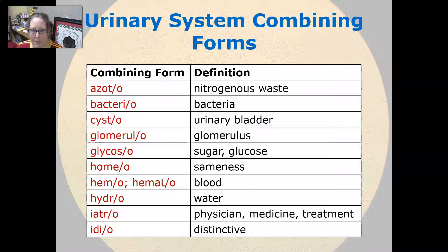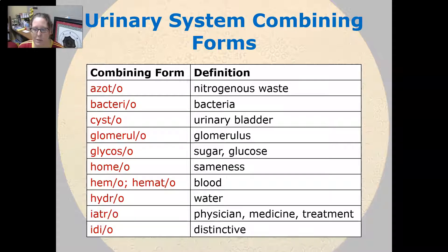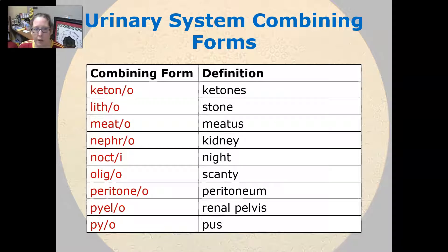Homeo means sameness, and hemo or hemato both mean blood. Hydro means water. Iatro means physician, medicine, or treatment — iatrogenic means something induced by physician, medicine, or treatment. Idio means distinctive. Ketono is ketones. Litho is stone.